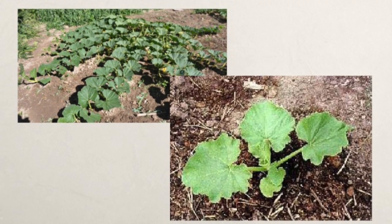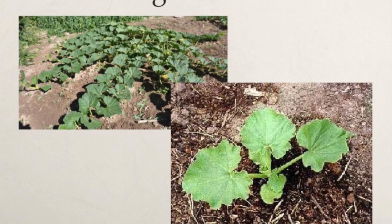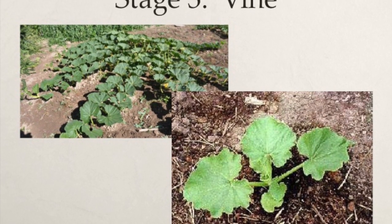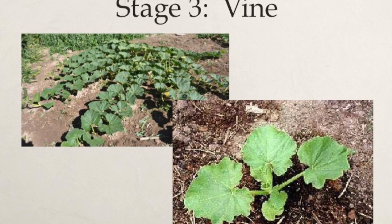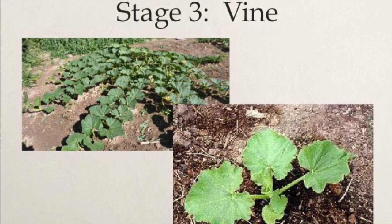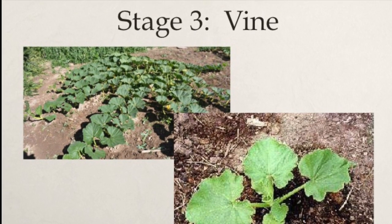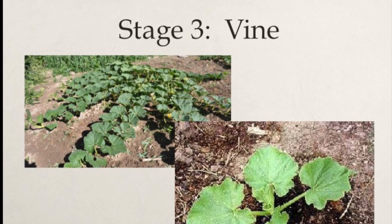Once that sprout becomes very strong and mature, a pumpkin plant grows large viney leaves. They spread out all across your garden and take up quite a bit of space.